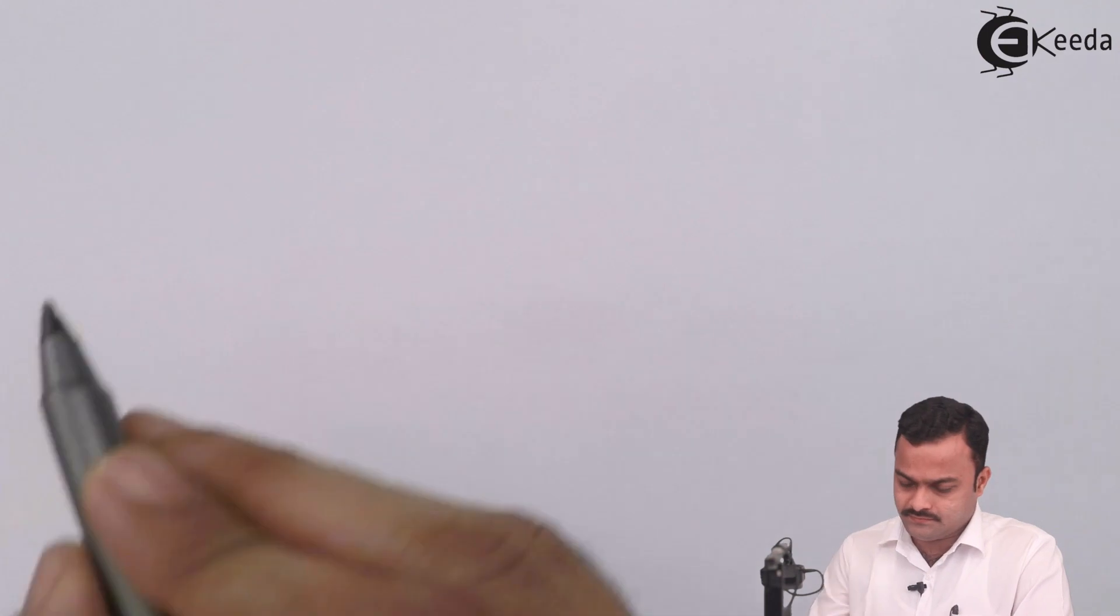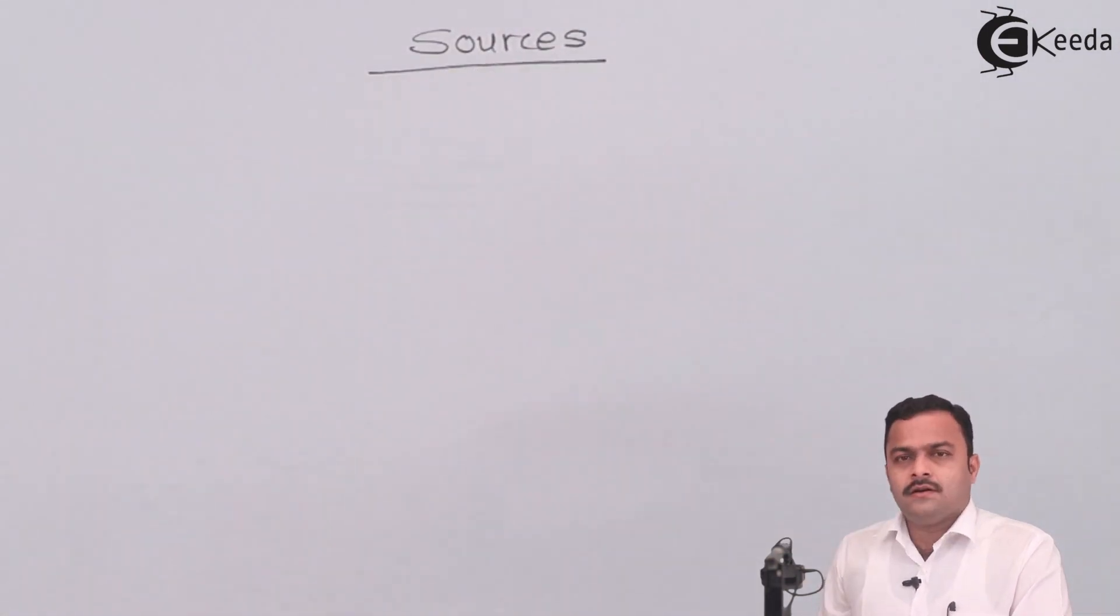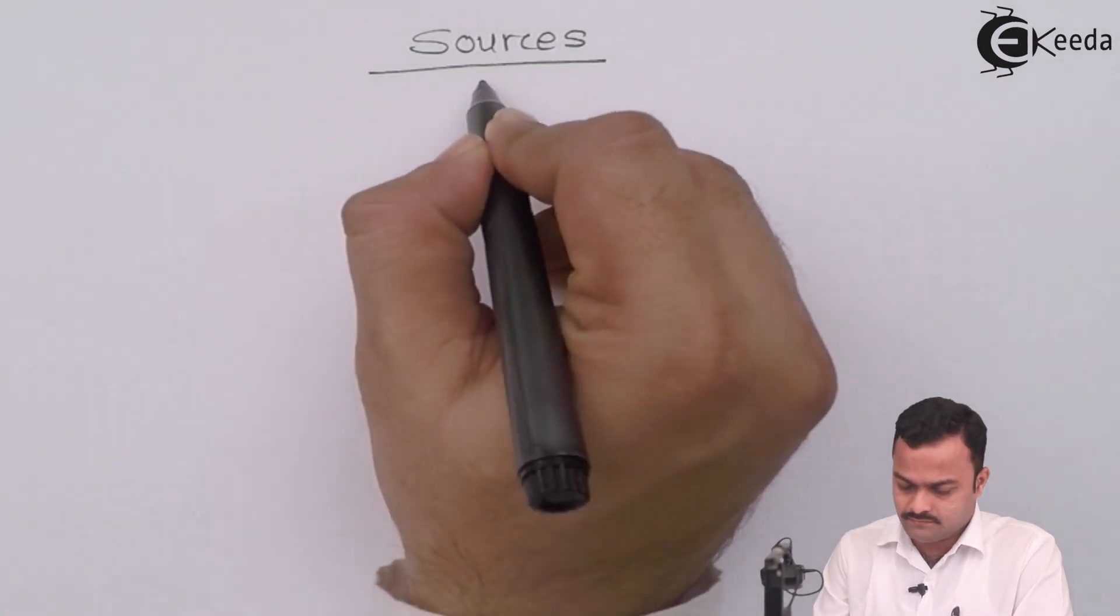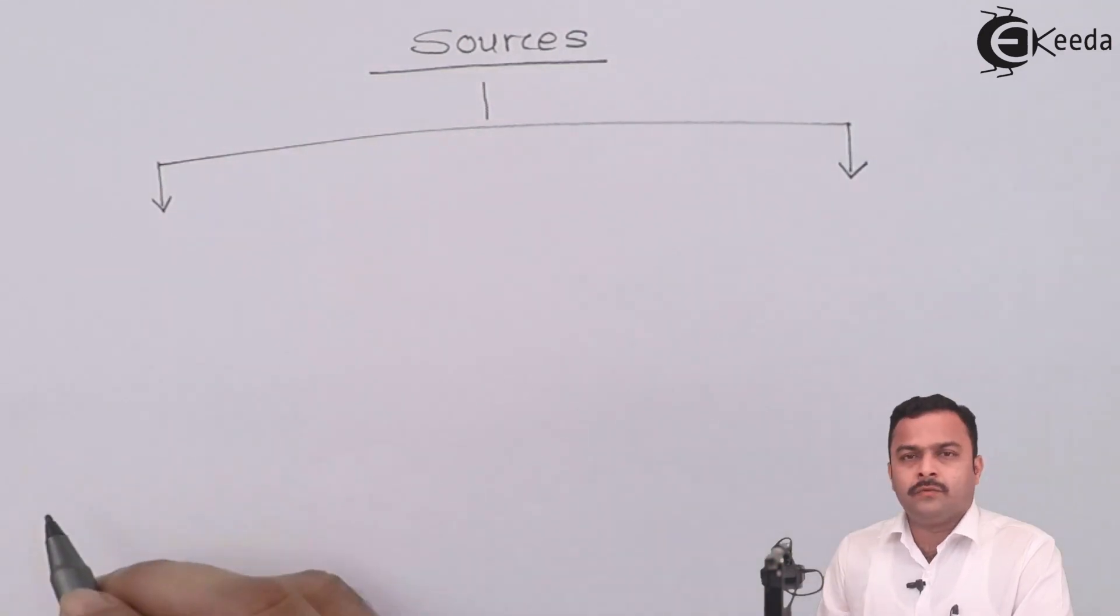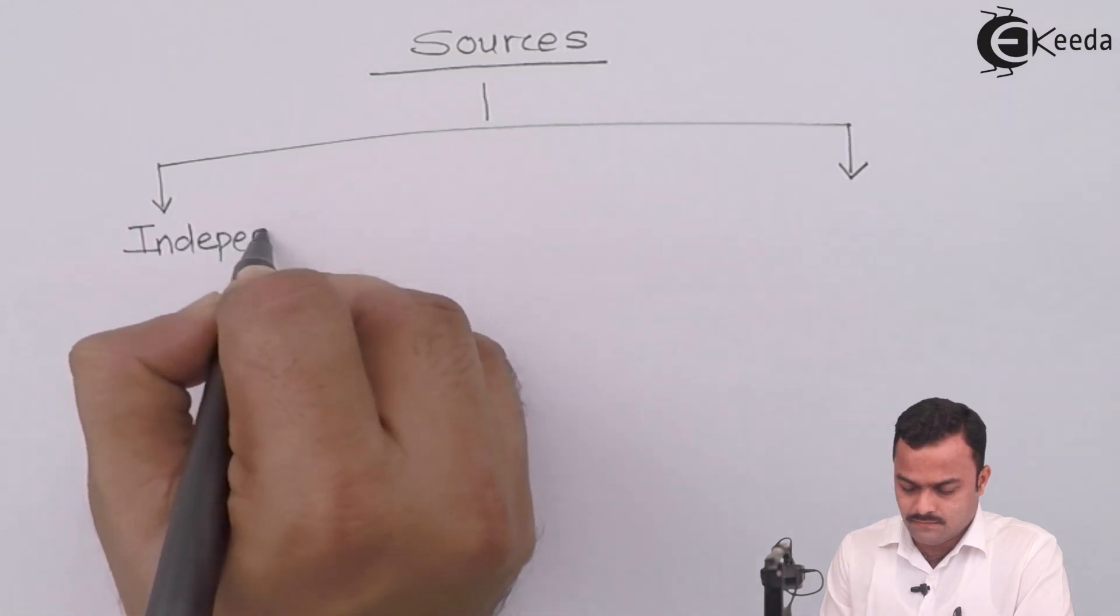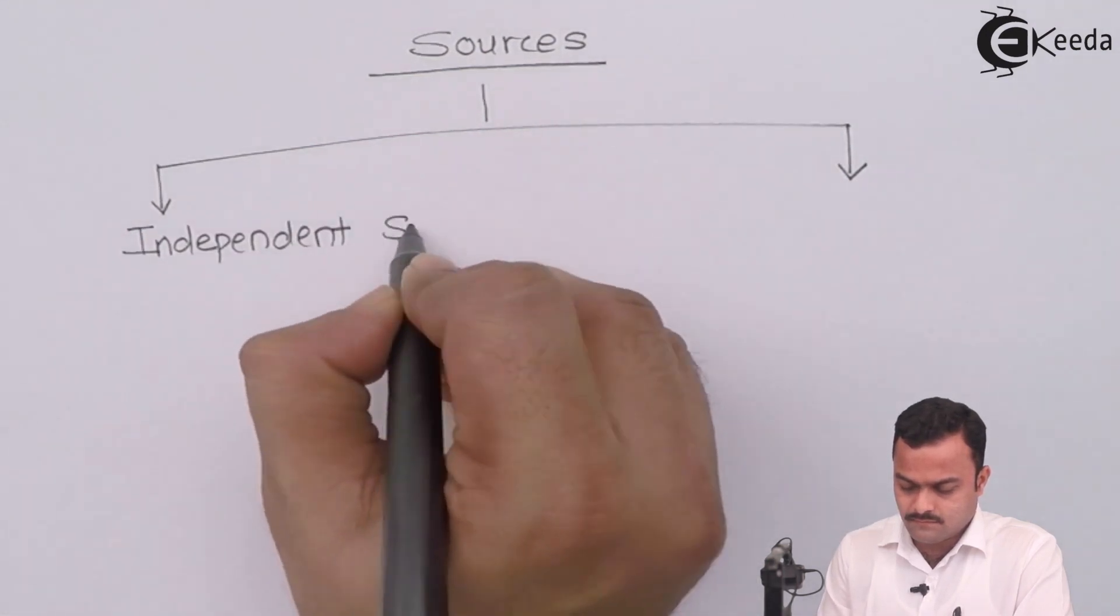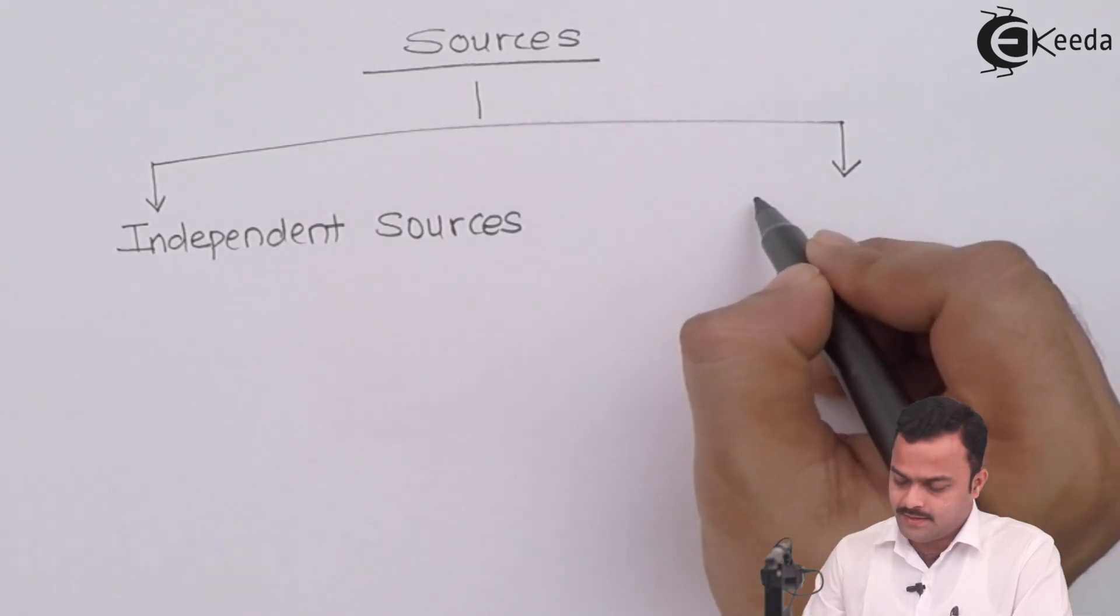Source is nothing but a basic element which gives energy in an electric circuit. There are two types of sources that we can have. One we can say independent source. And other type is dependent sources.